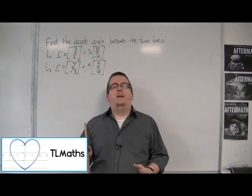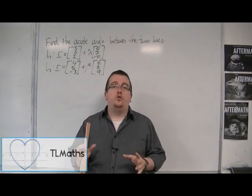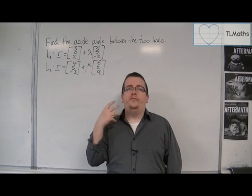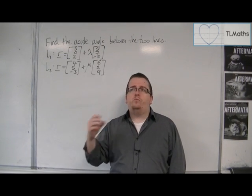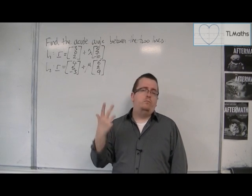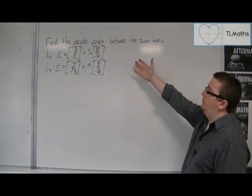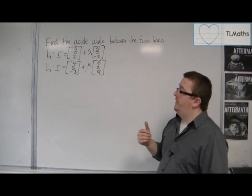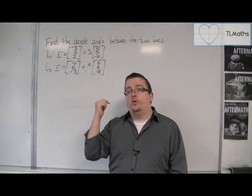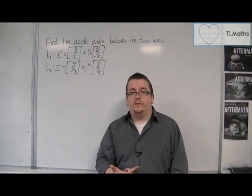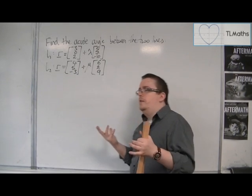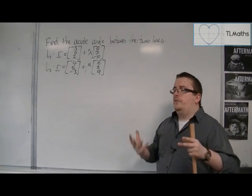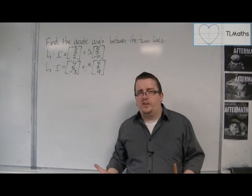We now have everything that we need in order to find the angle between two straight lines. We can do it with any two vectors, but with two straight lines there's an inherent problem. If I just write down any two lines in three dimensions, we know that potentially they could be parallel, they could intersect, or they could be skew lines. So if they are skew lines, how could they make an angle?